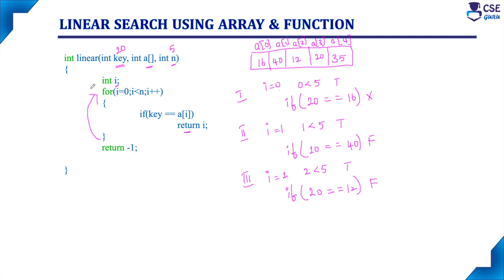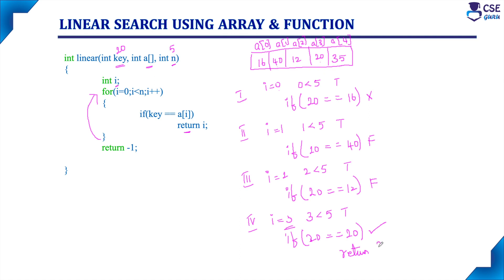Fourth iteration: i is incremented to 3. Check the condition — 3 less than 5 — condition true. If 20 equals a[3] — value is 20 — condition true. It will return i, which is 3. So it will return 3. This 3 will be returned to the main function, and there it will execute 'key element found in the array'.